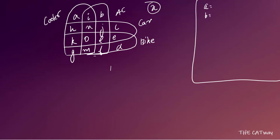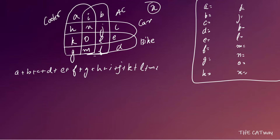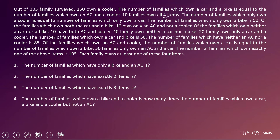So our variables are A, B, C, D, E, F, G, H, I, J, K, L, M, N, O, and X. The total 305 families gives us: A + B + C + D + E + F + G + H + I + J + K + L + M + N + O = 305. The 150 cooler owners gives us: A + I + K + H + N + G + M + O = 150.